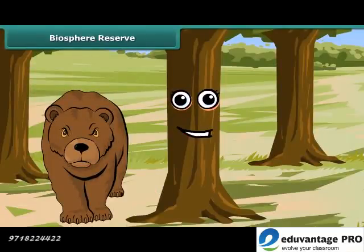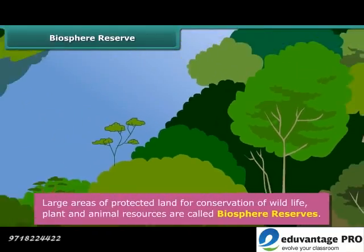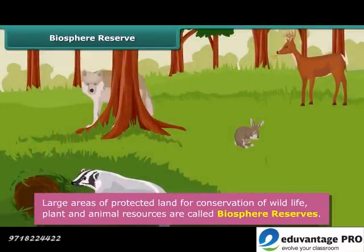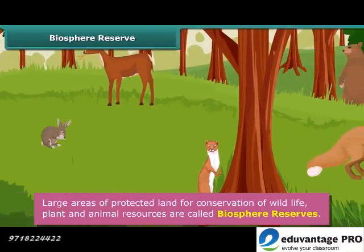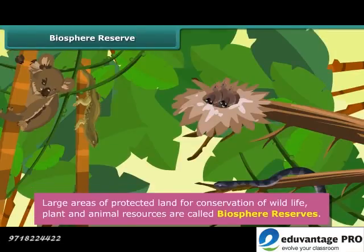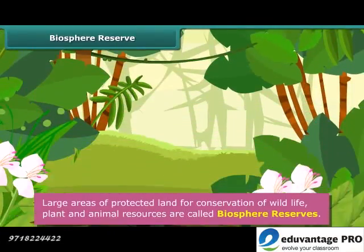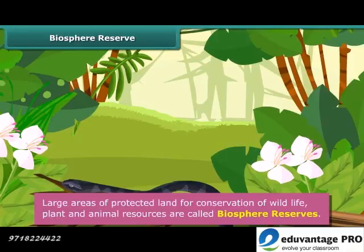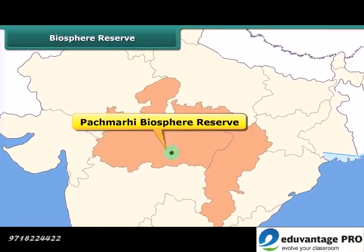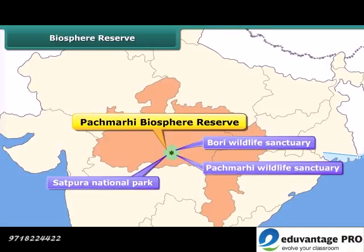Large areas of protected land for conservation of wildlife, plant and animal resources, and the traditional life of the tribals living in the area are called biosphere reserves. These help to maintain the biodiversity and culture of an area. A biosphere reserve may also contain other protected areas within it. For example, the Pachmarhi Biosphere Reserve consists of one national park named Satpura and two wildlife sanctuaries named Bori and Pachmarhi.